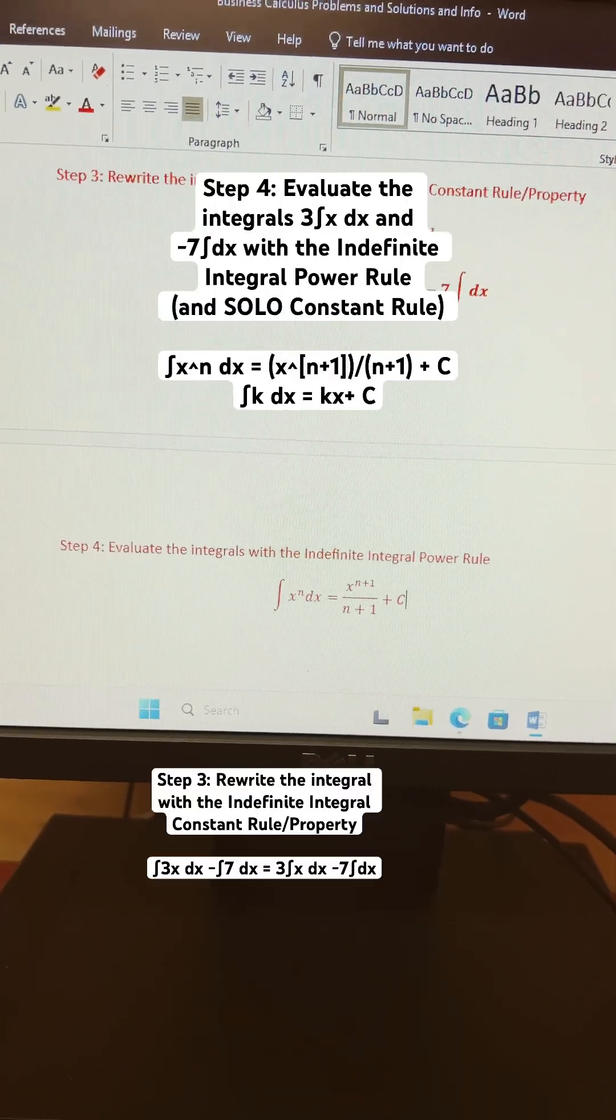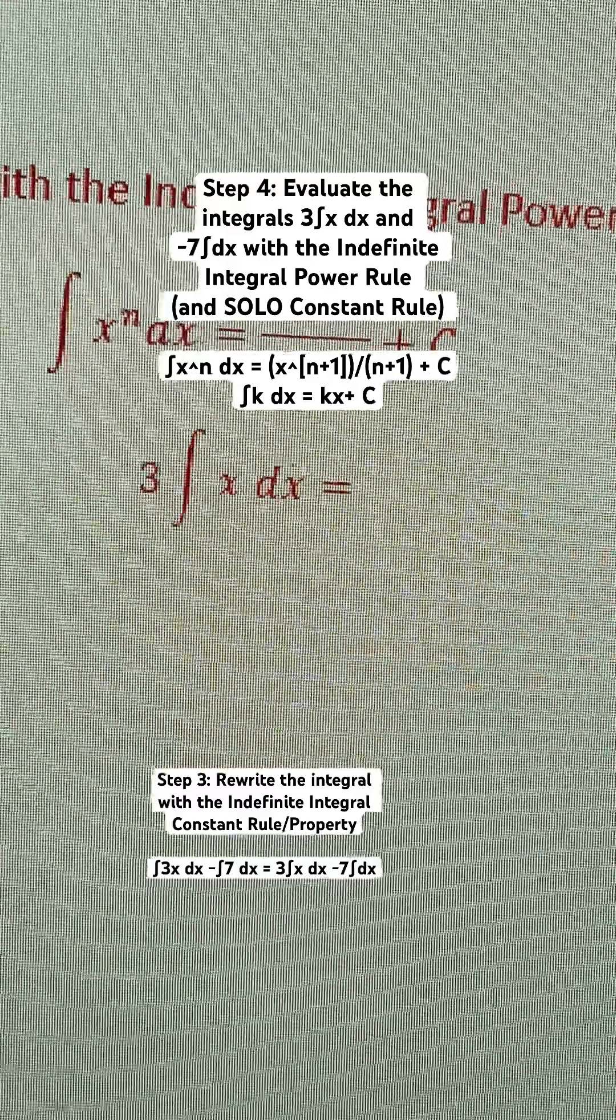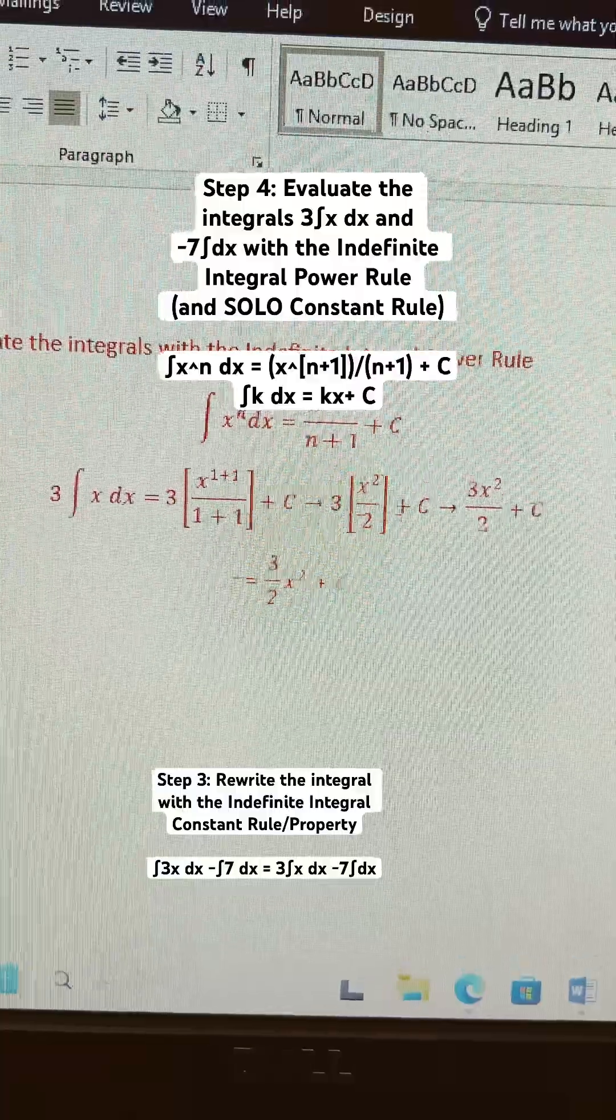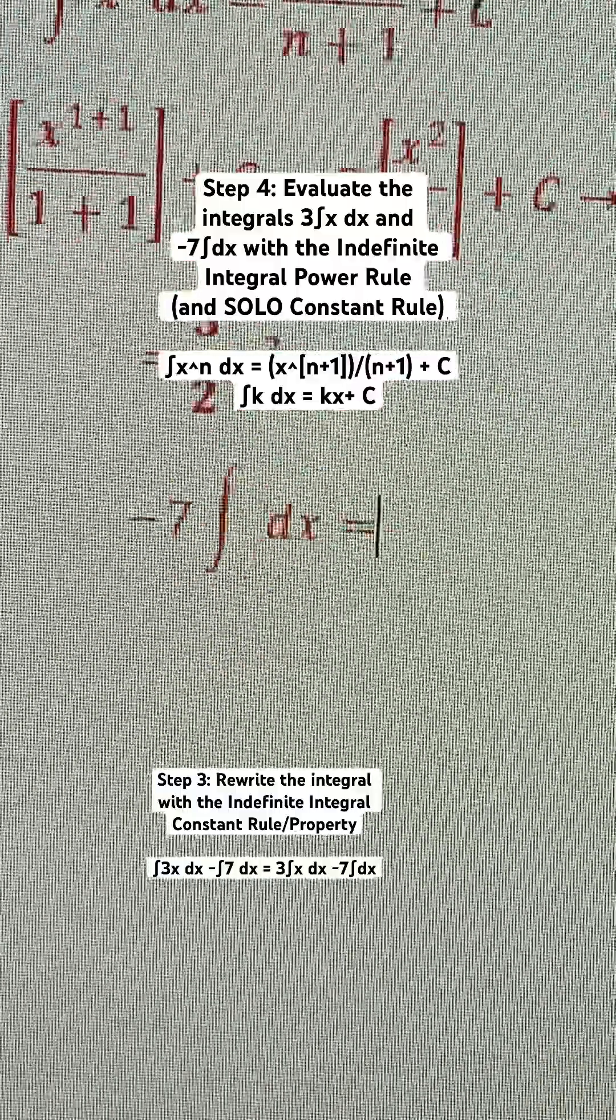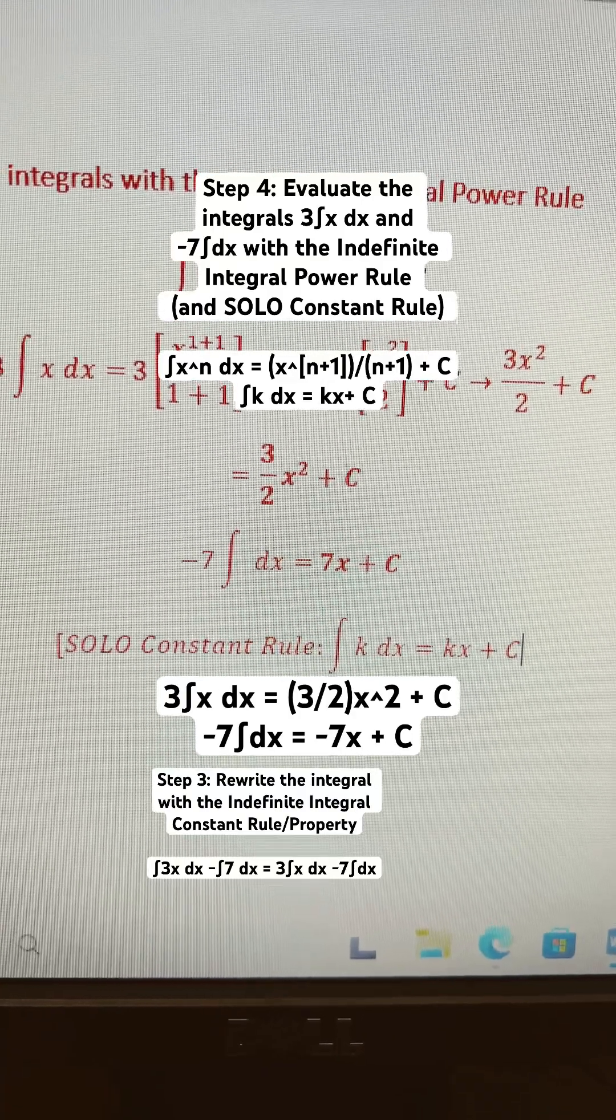Step 4 is to evaluate the integrals with the indefinite integral power rule. Let's find 3 integral x dx first. This is the process for that. Now we got negative 7 integral dx. You don't even need to use the power rule, just use the constant rule for that.